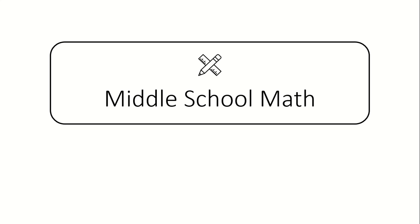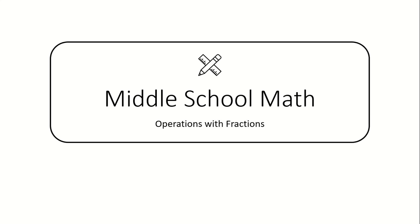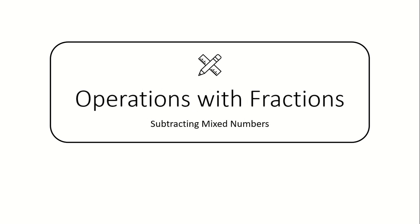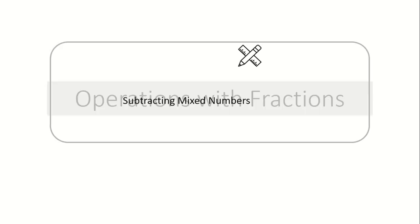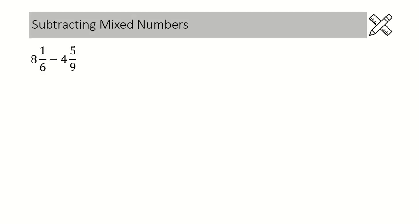Hello everybody, this middle school math video is about operations with fractions. The lesson is subtracting mixed numbers. We know we can only subtract fractions if we have a common denominator, so if you're subtracting two mixed numbers and you do not have a common denominator, the first step is to figure out the lowest common denominator.